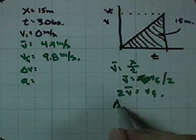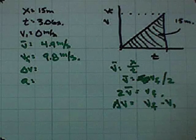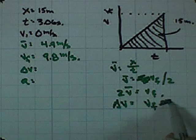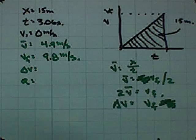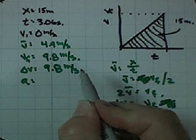Change in velocity is easy. Change in velocity is velocity final minus velocity initial, and velocity initial once again is zero. So, change in velocity is also velocity final, 9.8 meters per second again.